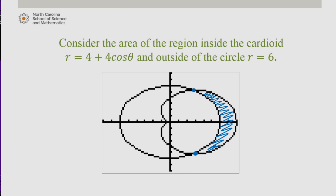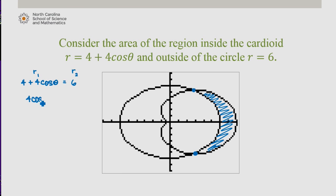Setting 4 plus 4 cosine theta equal to 6, I get 4 cosine theta equals 2, or cosine of theta equals one half. Between 0 and 2 pi, this occurs at pi over 3 and 5 pi over 3.